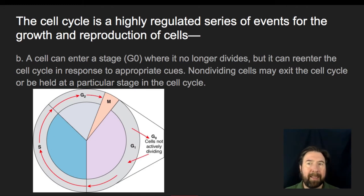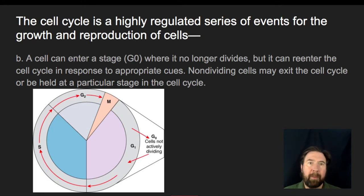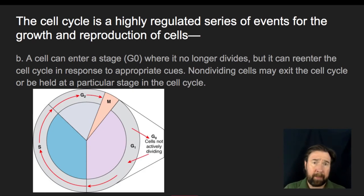Non-dividing cells may be held in that G0 phase for a long series of times. It is important to note that there are times when cells don't seem to be in any of the traditional cell cycle phases — they've popped out into that G0 phase of not actively dividing, not proceeding through the cell cycle, but just being adult cells carrying out cellular activities.